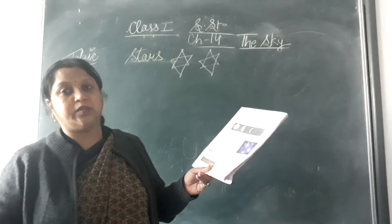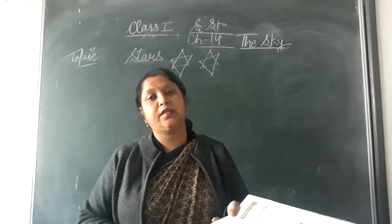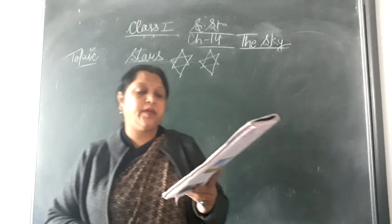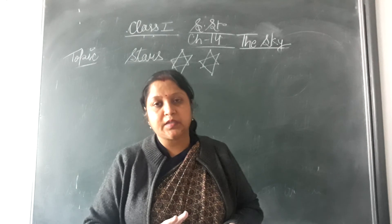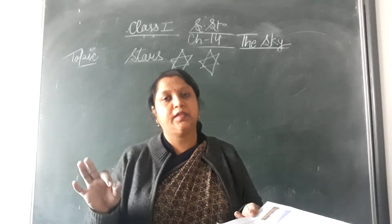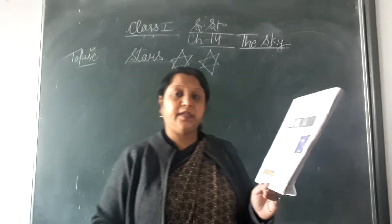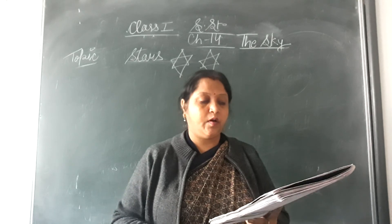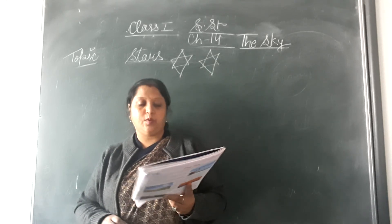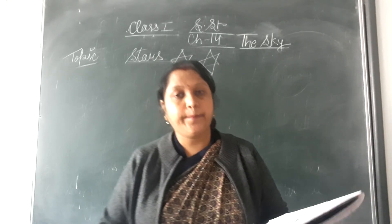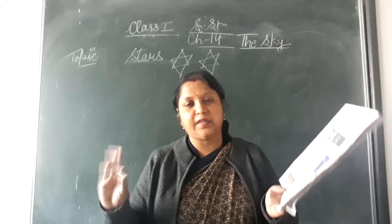Stars are very large in size. Yeh sun bhi bahut bade hain — stars. They look small because they are very far. Yeh hum ko itne chhote se dikhte hain kyunki yeh humse bahut doori par hain. Stars are many in number — we cannot count them. Sun only one, moon only one, but stars are uncountable. Inko hum gin nahin sakte — kitne stars hain!